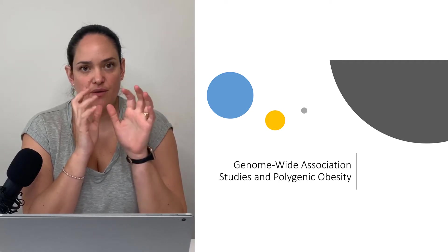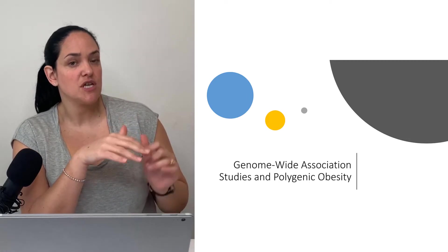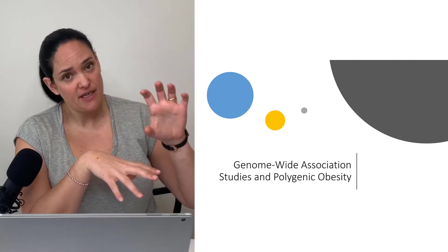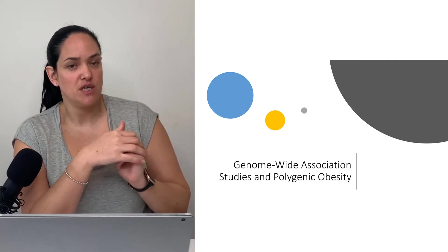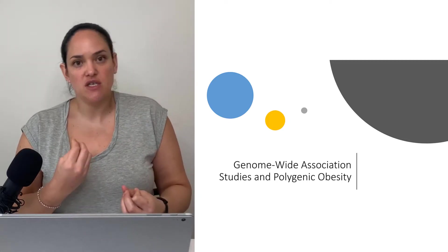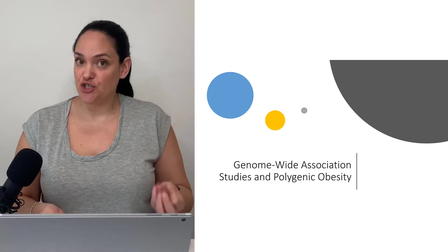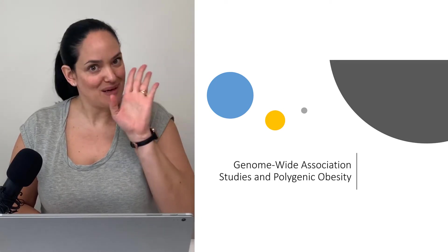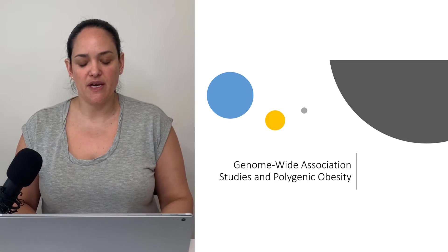We learned in the last video that obesity has a genetic origin that's well established, and that we believe it is way more of a polygenic disease compared to one that's potentially monogenic. In obesity, we believe that the cumulative effect of changes in a variety of genes comes together to increase risk of obesity in a way that we don't fully understand yet, but that is still an area of investigation.